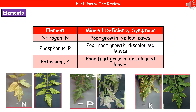If we've got a lack of nitrogen in our soil, then the leaves are yellow and the plants don't grow very well — they've just got general poor growth. If it's a lack of phosphorus, then we get discolored leaves and poor root growth. Whereas if it's a lack of potassium, then we have poor fruit growth and also discolored leaves.